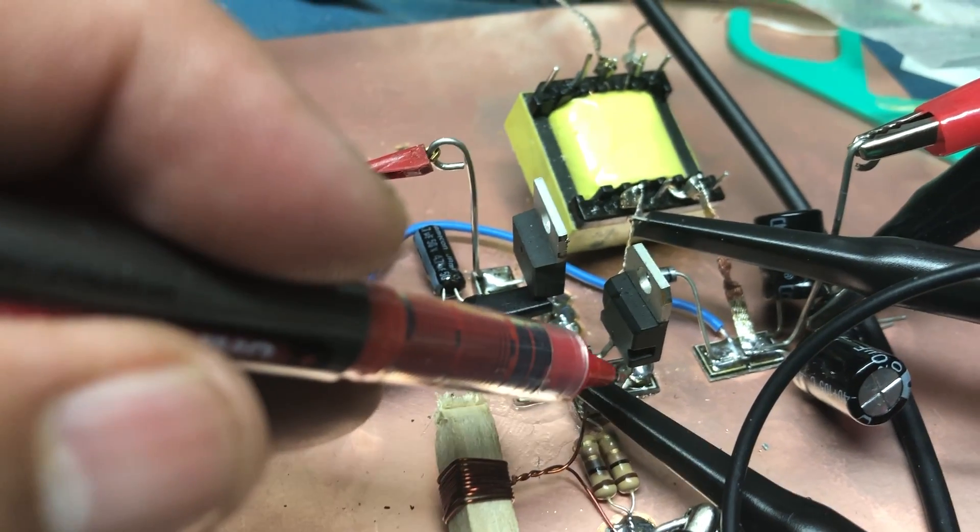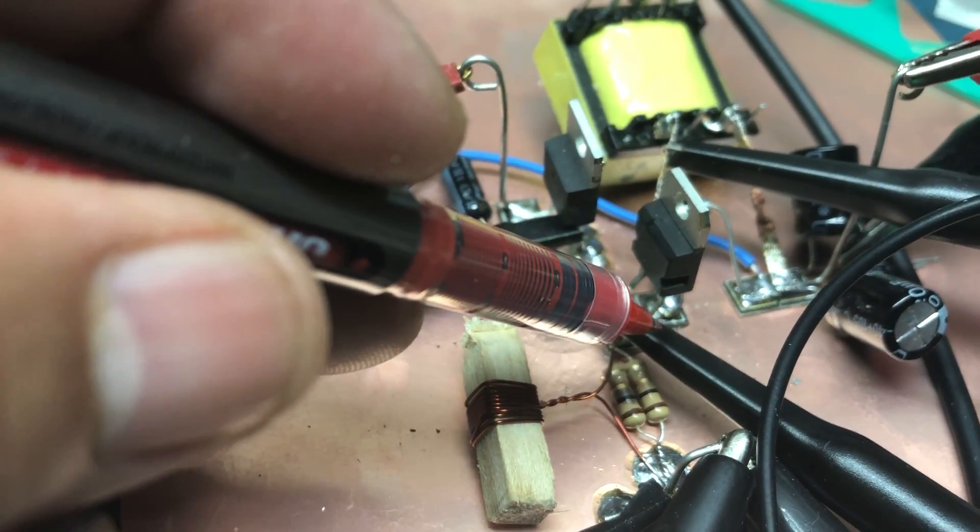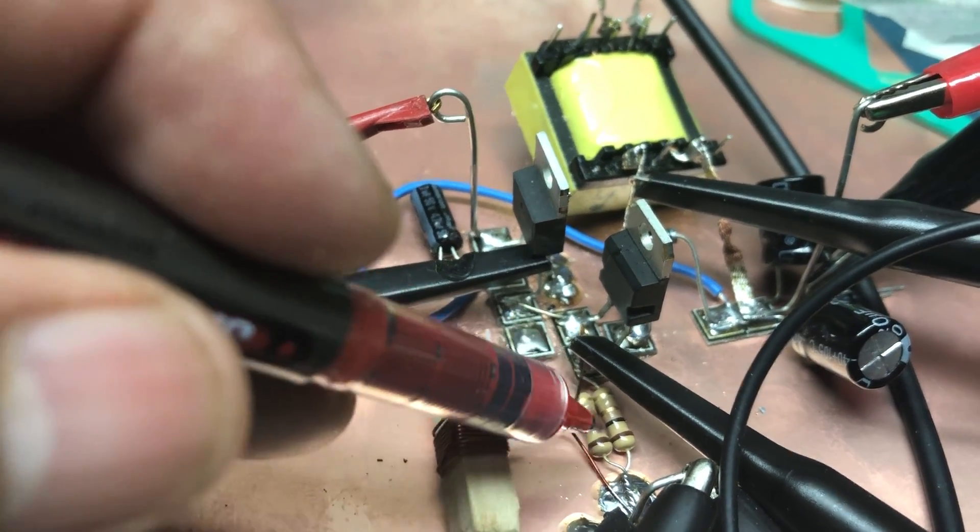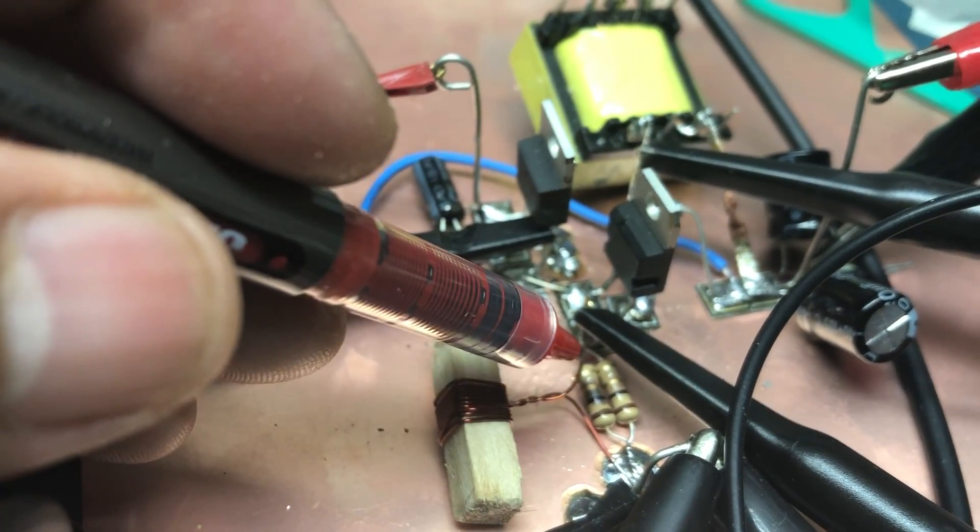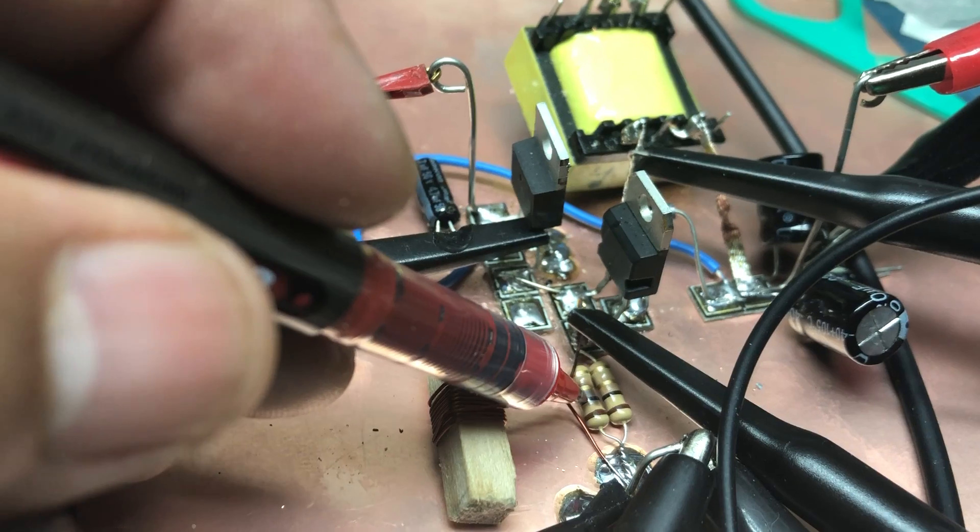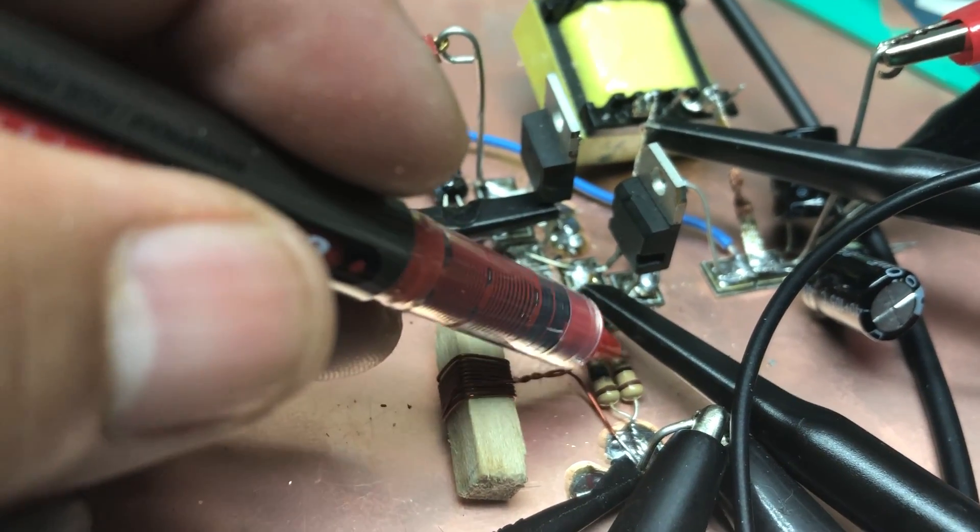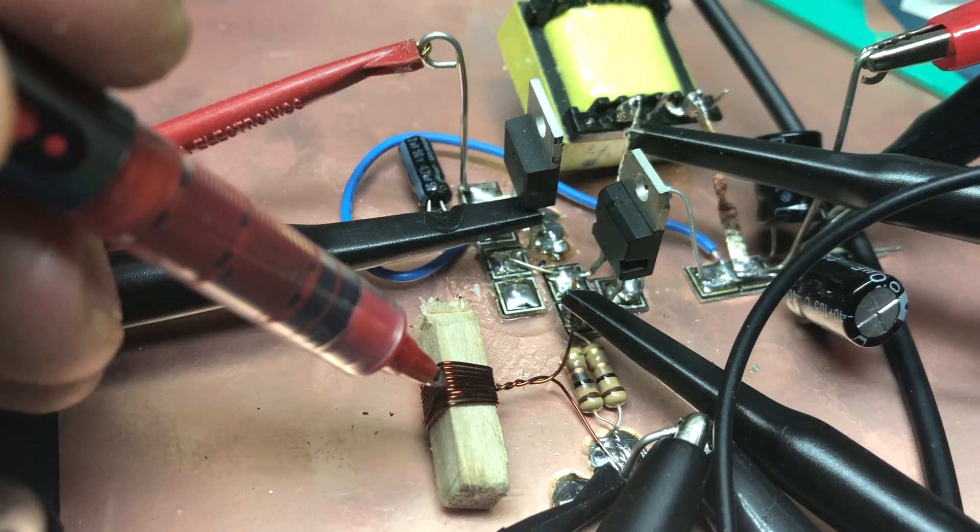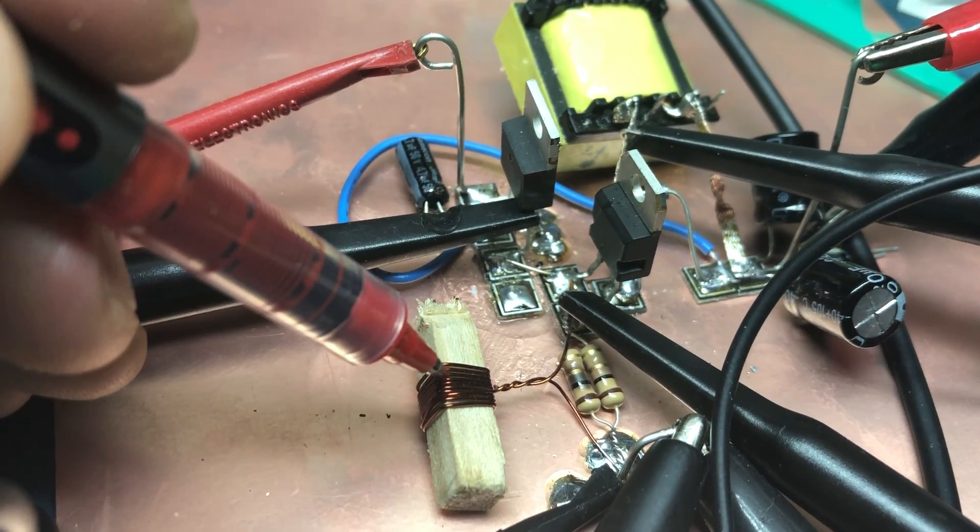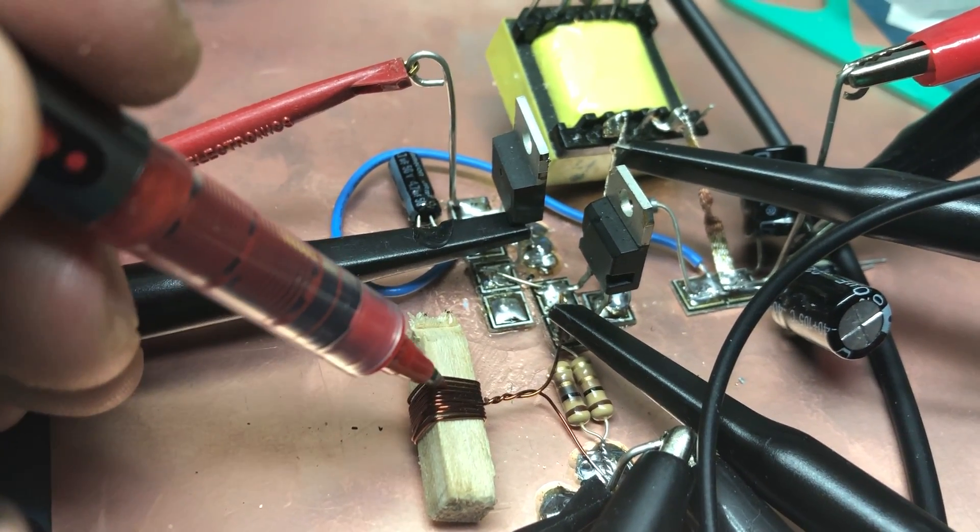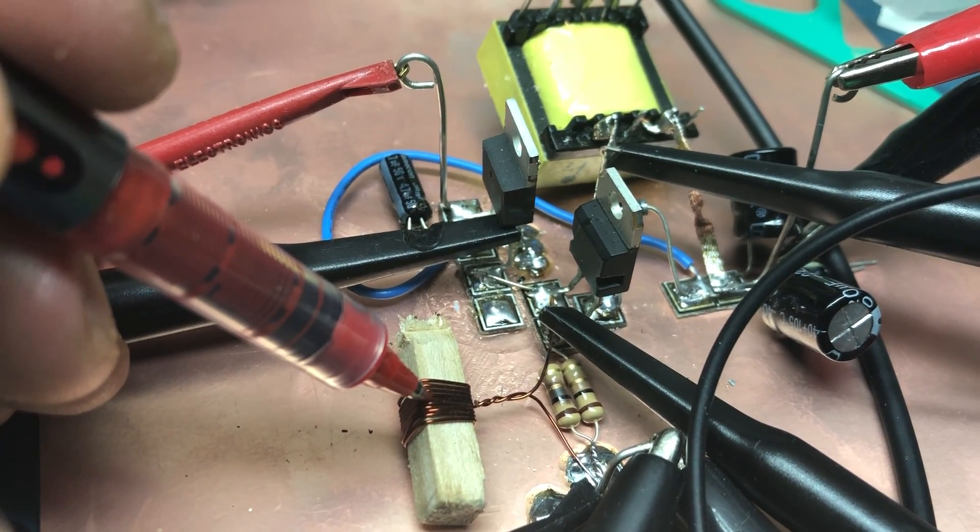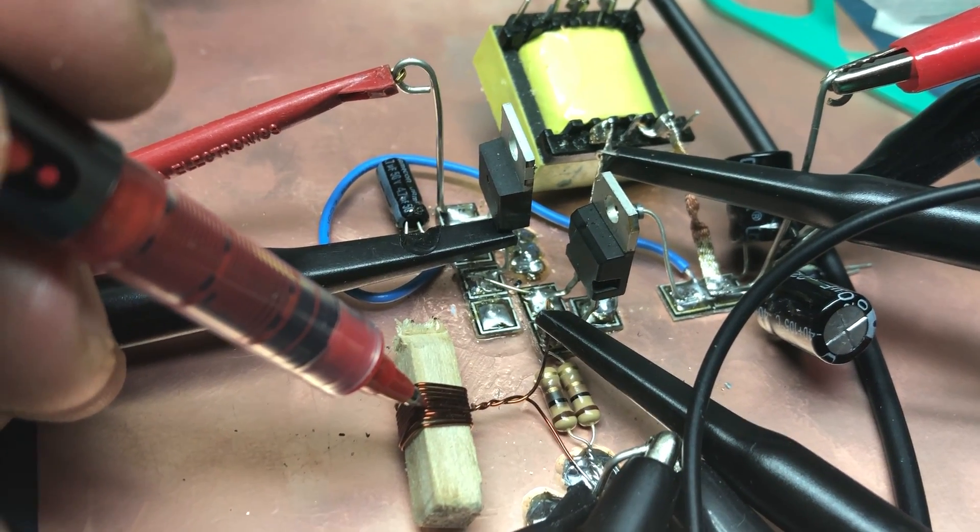That's the gate and then right here is the source. That's where I put the sense resistors. As you can tell they started burning up, so I don't have anything that low.